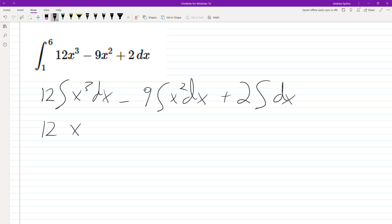So here we have 12 and this is going to be x raised to the fourth. We add one to the exponent, divide by that minus nine x cubed divided by three plus two x.